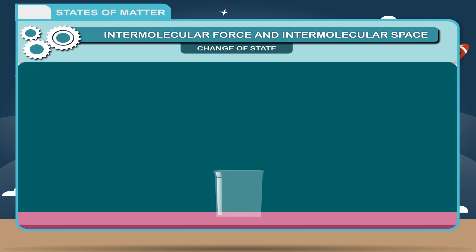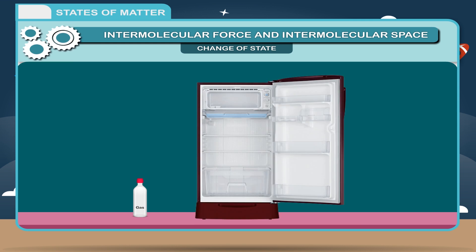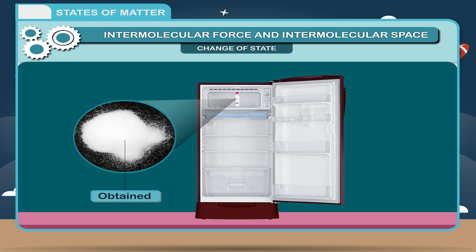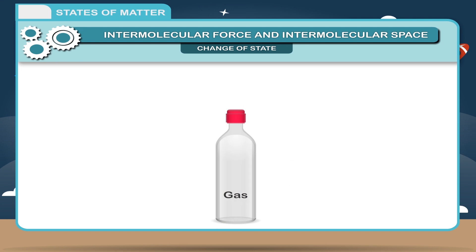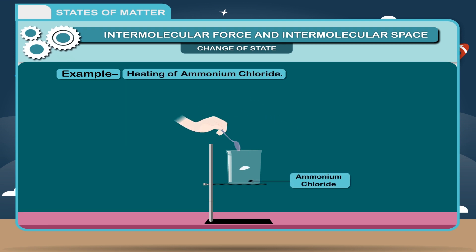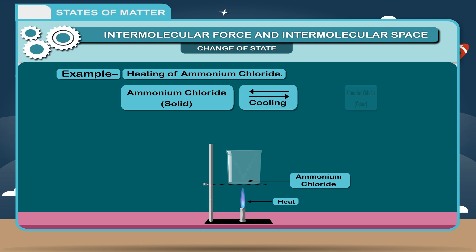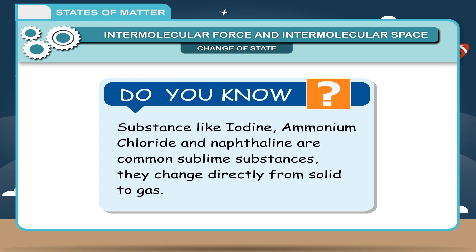Sublimation. Some substances change directly from solid to gas on heating. Such a conversion is called sublimation. When cooled, the vapors of such substances directly solidify. The solid thus obtained is called a sublimate. Iodine, ammonium chloride, and naphthalene are common substances that sublime. A direct change of state from a gas to a solid is called deposition. Heating a solid to change directly to gaseous state without the intermediate liquid state. Example: Heating of ammonium chloride. Ammonium chloride (solid) with cooling becomes ammonium chloride vapor. Do you know? Substances like iodine, ammonium chloride, and naphthalene are common sublimate substances; they change directly from solid to gas.